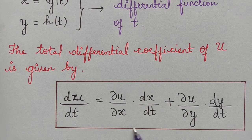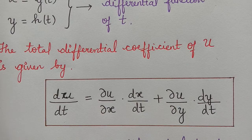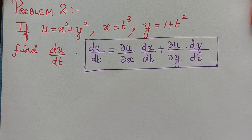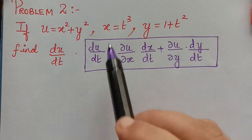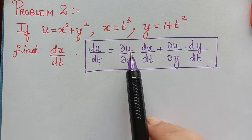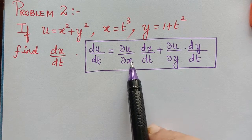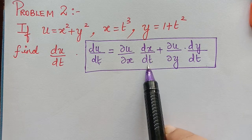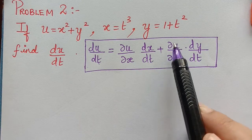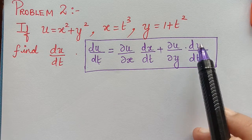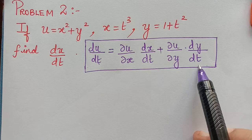Let us first write this formula. du by dt is equal to ∂u/∂x multiplied with dx/dt, plus ∂u/∂y multiplied with dy/dt.